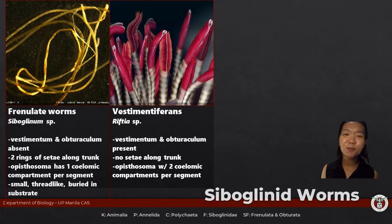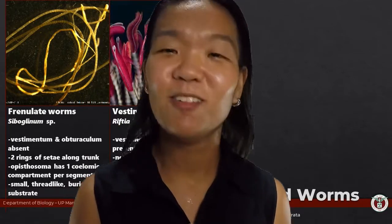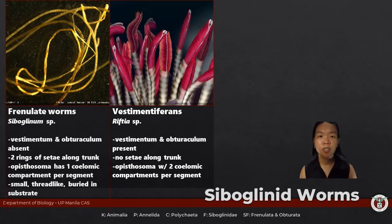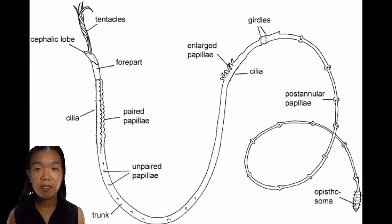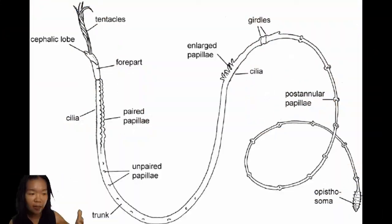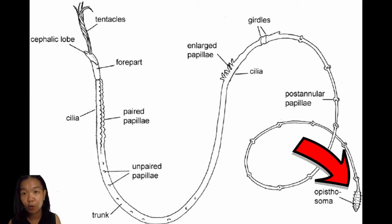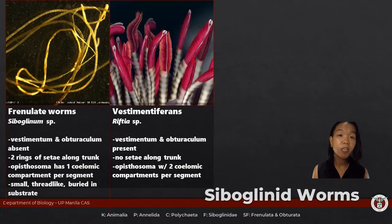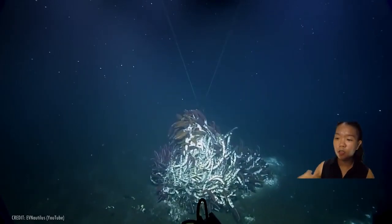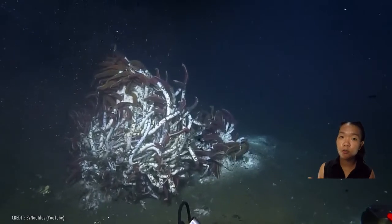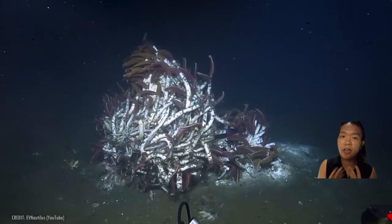Siboglinid worms used to belong to separate phyla — Vestimentifera (giant tube worms) and the beard worms or Pogonophora. They are now under family Siboglinidae. Common features include a cephalic lobe with many ciliated, vascularized tentacles. They have a trunk that is not segmented with no internal septa. They are placed under annelids because they have an opistosoma — the segmented posterior part with setae for anchoring. They live in tubes, and as adults have no mouth or anus. Instead they have a trophosome — a lobed organ containing chemosynthetic bacteria that produce energy from organic-rich vent environments — providing nutrition without a digestive system.